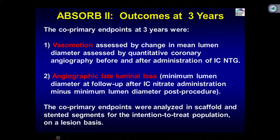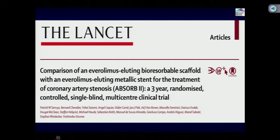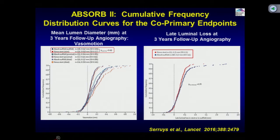Absorb 2 was the first randomized trial — 2-to-1 randomization of Absorb BVS versus Xience. One-year data showed Absorb was non-inferior to Xience, though scaffold thrombosis was 0.9% versus 0% and TLR slightly higher. Two-year TCT data showed the trend continued — Absorb had slightly higher event rate but within non-inferiority limits. Scaffold thrombosis went to 1.5%. Then the worrisome news came from 3-year data at TCT raising concern about the first-generation bioabsorbable stent. The pre-specified 3-year outcome assessed vasomotion by intracoronary nitroglycerin and angiographic late lumen loss, with 93% follow-up in both groups.